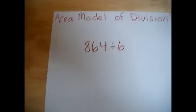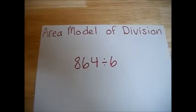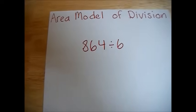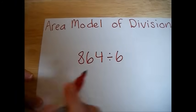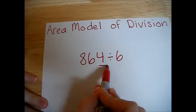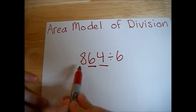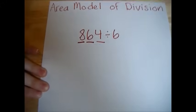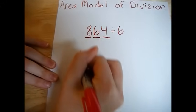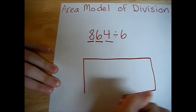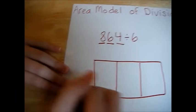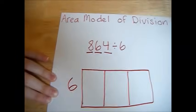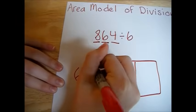Welcome back. I trust you had some success, but let's double check. So we had 864 divided by 6. Again, we have 3 digits: 4 ones, 6 tens, and 8 hundreds. So we make our model with 3 boxes. We place our 6 off to the side and our 864 in the first box.